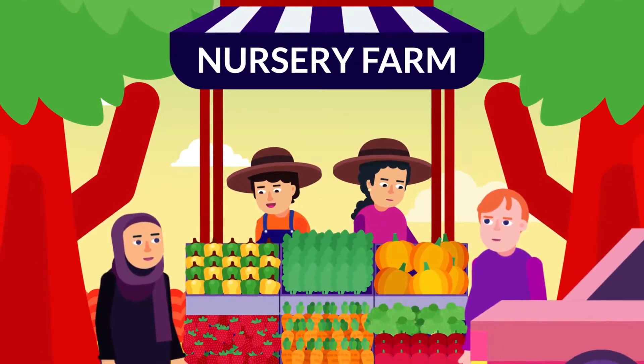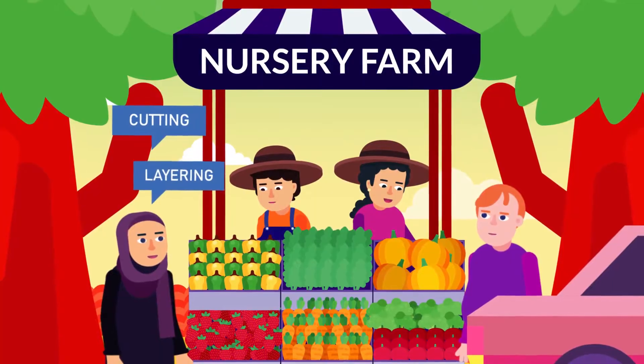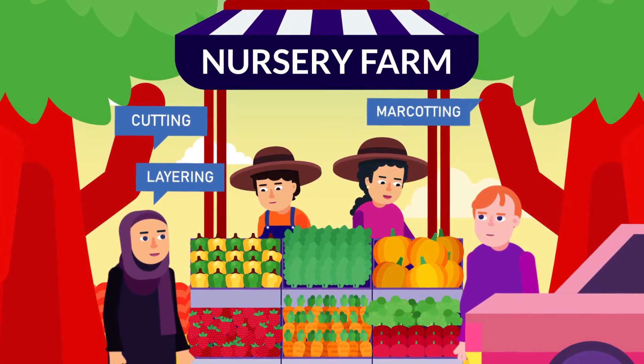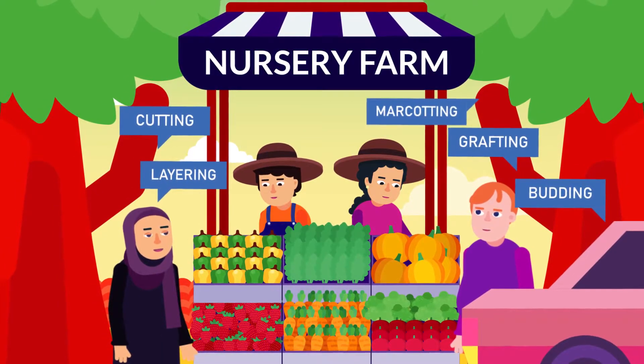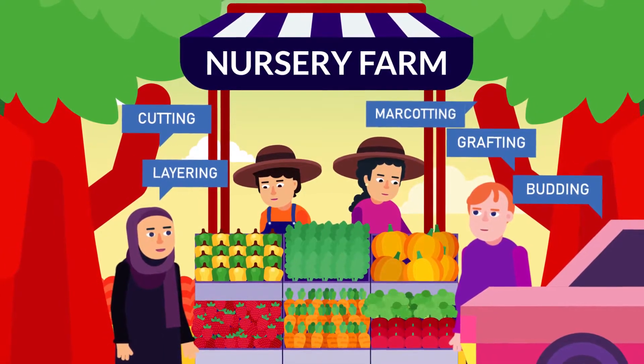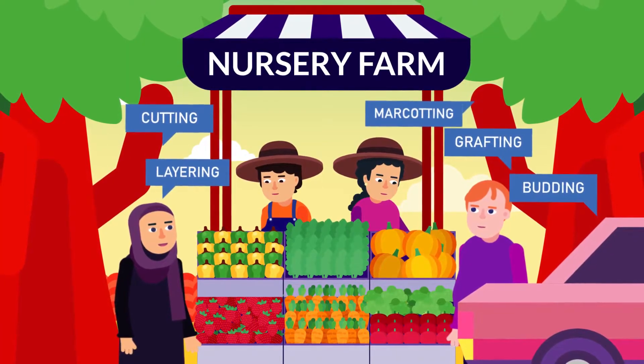Today, we will discuss the terms cutting, layering, markotting, budding and grafting, and how vegetative reproduction can be achieved by them.